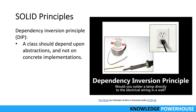Abstractions should not depend on details — details should depend on abstractions. In the socket-lamp example, the socket interface defines how electricity is transferred; the lamp and electricity source each conform to that interface. Similarly in software, we use interfaces, and real instances are created by a container at runtime. You depend on the abstraction — the interface — not on a concrete implementation.